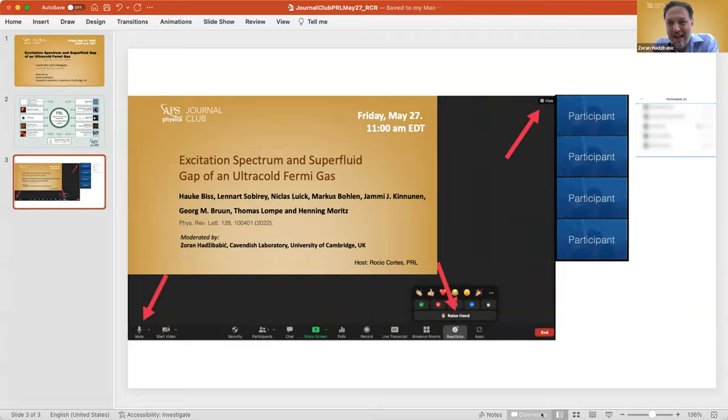Thank you. It's a pleasure to moderate this Journal Club on a very exciting paper. This is a combination of experimental and theoretical work across three universities: Hamburg, Aalto, and Aarhus. We have some representatives of both the experiments and the theory. Experimental work was done at Hamburg in the group of Henning Moritz, who has been a professor there now since 2010.